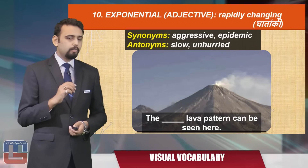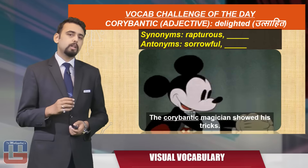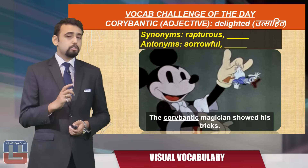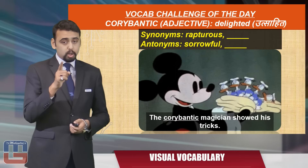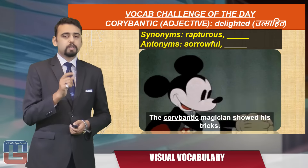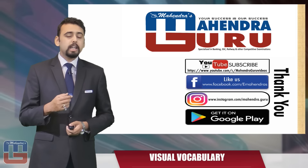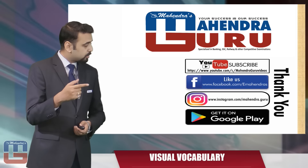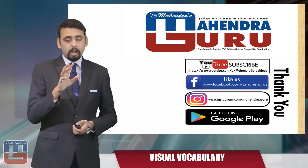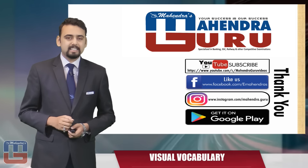That was all in the vocab section. Here's the vocab challenge of the day: the word 'coribantic,' an adjective meaning delighted — in Hindi, 'utsahit.' The given synonym is 'rapturous' and the given antonym is 'sorrowful.' Tell us the missing synonym and missing antonym from our previous session. We hope you liked the video. Subscribe to our YouTube channel, like our Facebook page, follow us on Instagram, and download our app available on Google Play Store and Windows Store. Your success is our success. Thank you.